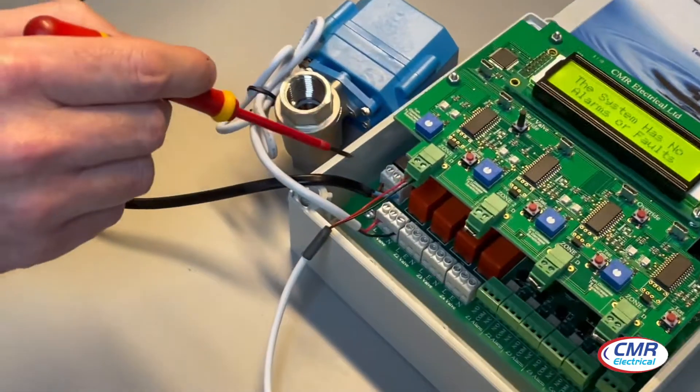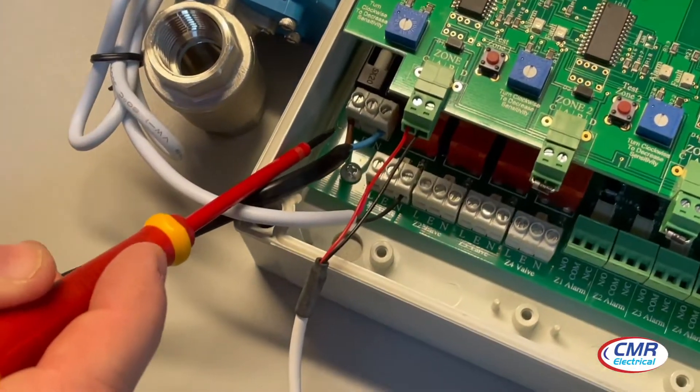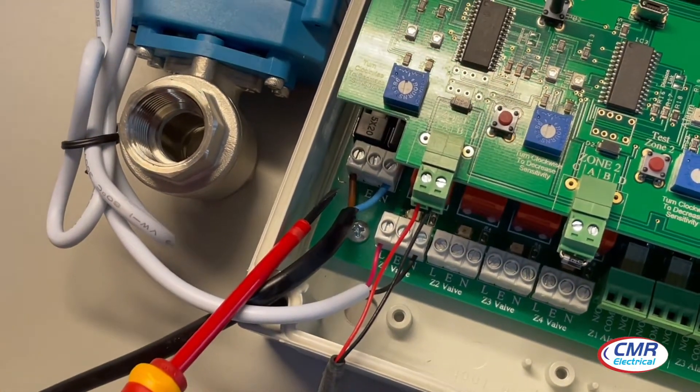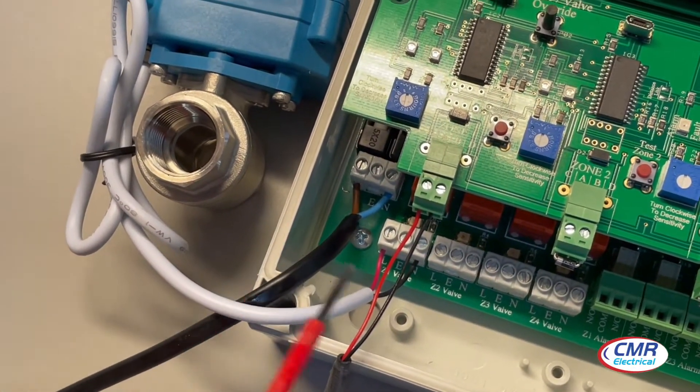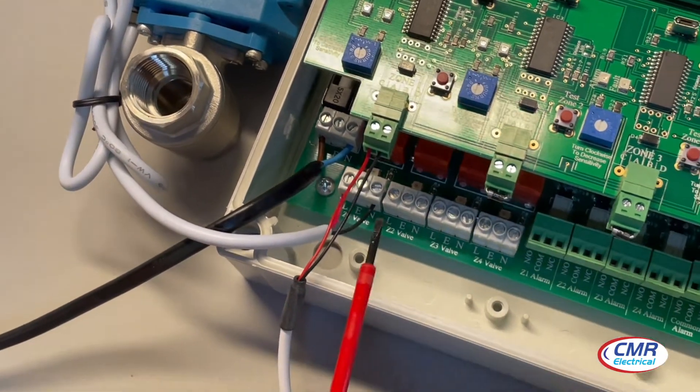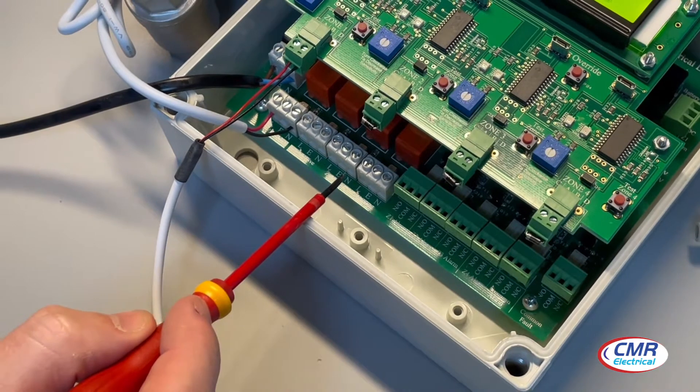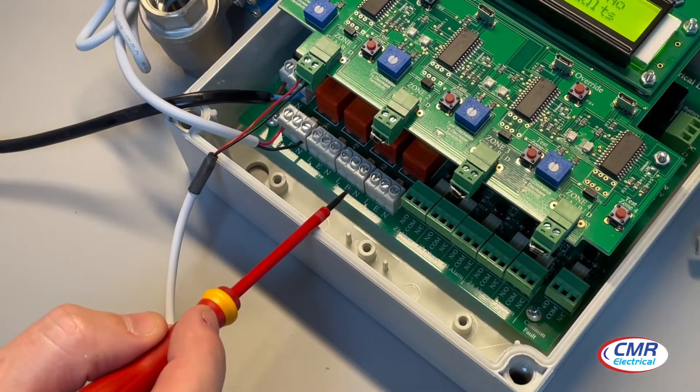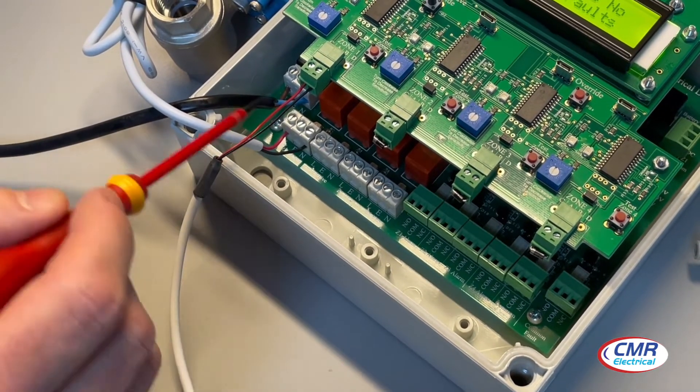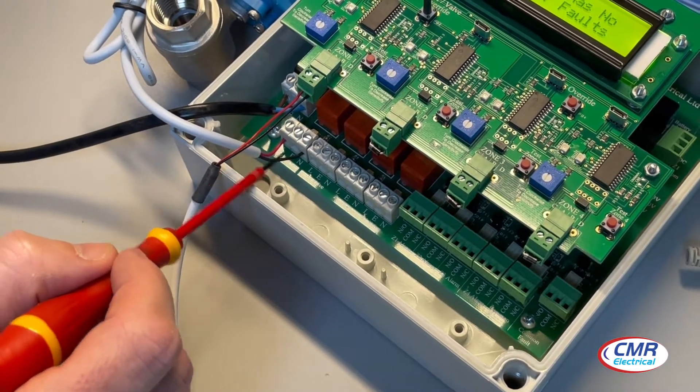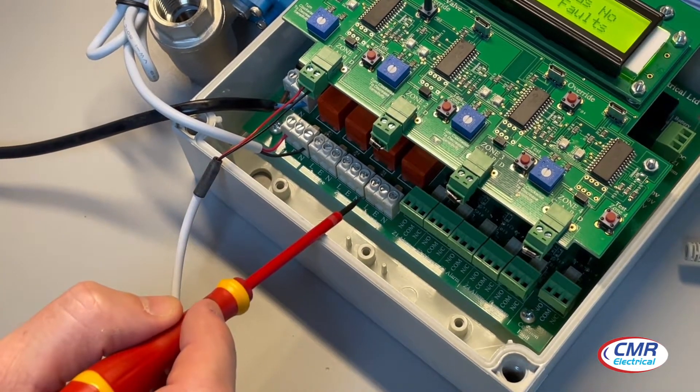Coming down, the incoming power supply is here: live, earth, neutral, three-way thermal block. Next to this is the valve control. Now with the valve control on this particular system, you can have common valve control or individual valve control per zone. In this particular application we've got individual, as you can see all four terminals are fitted.